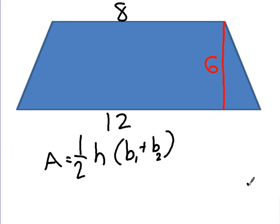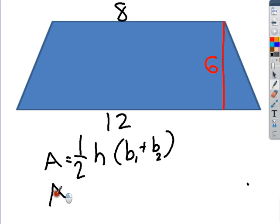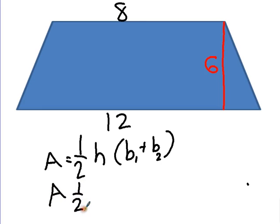So basically, what you're doing is you're taking the average of the top and the bottom and you're multiplying it by this height right here. So in this case, I have 12, 8, and 6. So I have my area. It's going to equal 1 half. What's my height? What's it going to be? My h. What's my h going to be? 6.